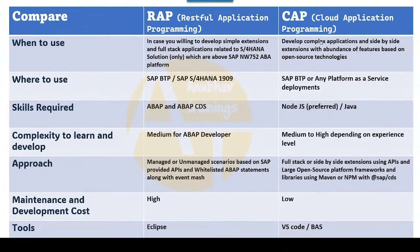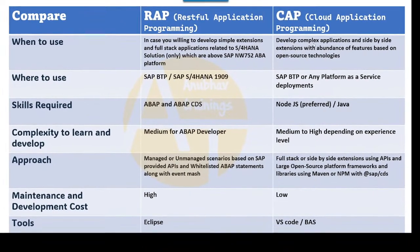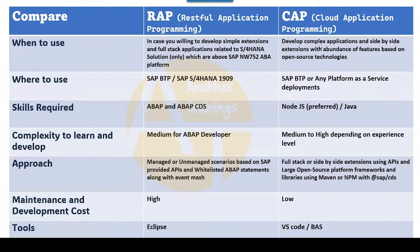When you need a highly complicated and complex application with complex architecture, where you get full flexibility and full support from the framework, you go with CAP. It can help you build side-by-side extensions with an abundance of features based on open-source technologies. Open-source technology offers you both Java and Node.js, and the cloud offers a large variety of open-source modules using NPM or Maven.